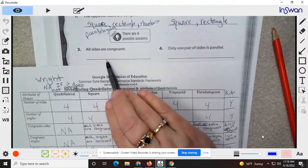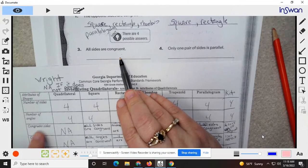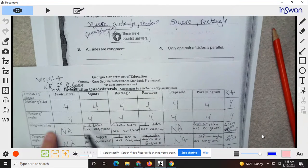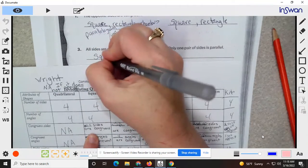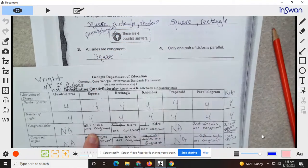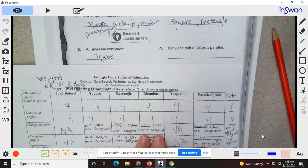All sides are congruent, go to congruent sides. All square and all rhombus.